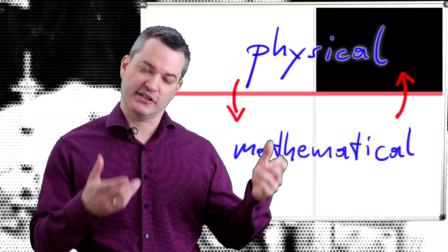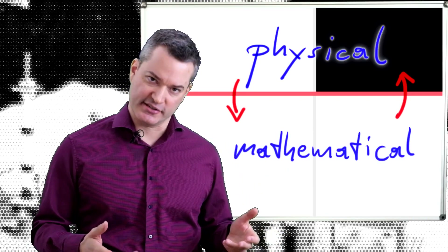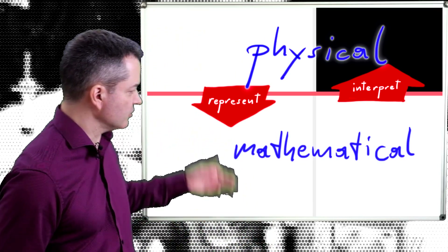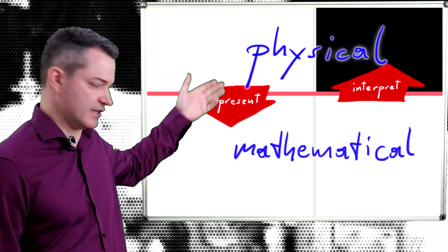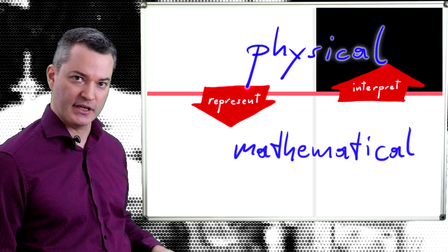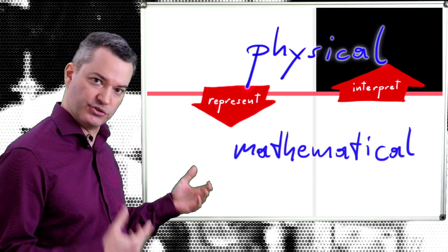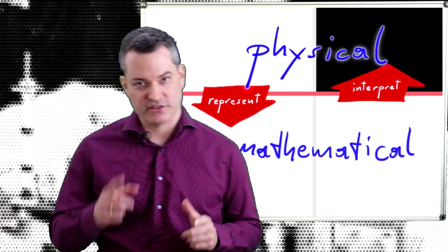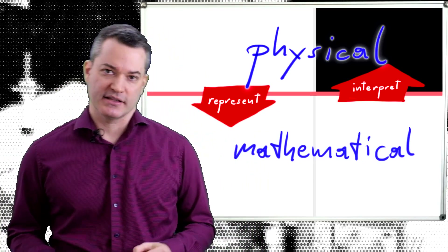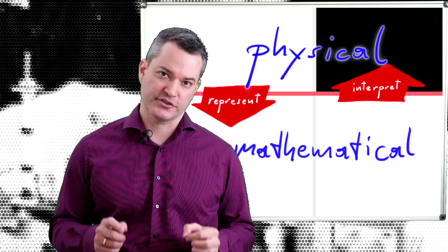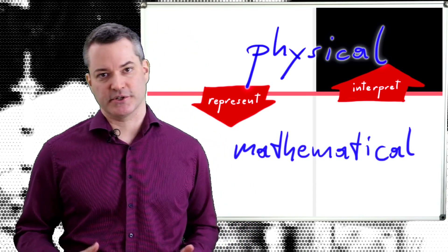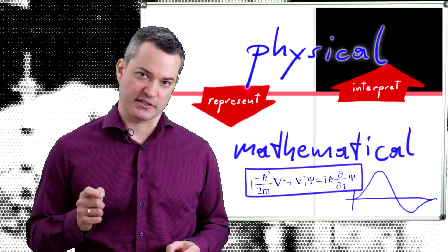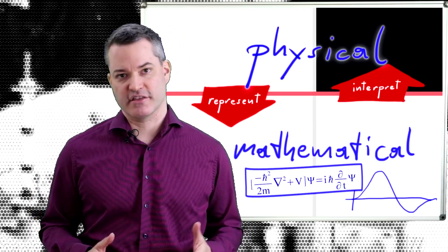Connections between the physical and the mathematical necessarily go in both directions. The theory tells us how to represent our physical knowledge mathematically, and it tells us how to interpret mathematical solutions physically. It is crucial to understand that there is no inherent physical meaning in mathematical objects — whatever physical meaning there is must be explicitly postulated by the theory.